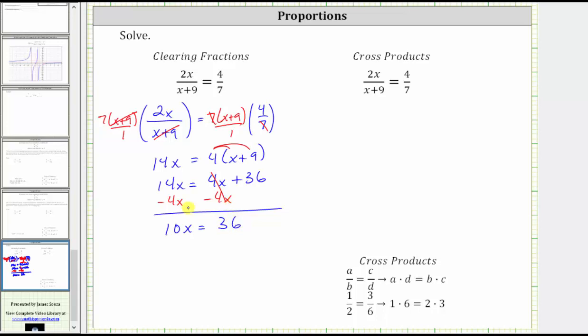The last step to solve for x is to divide both sides by 10. Simplifying, 10 divided by 10 simplifies to one. One times x is x. We have x equals 36 tenths.